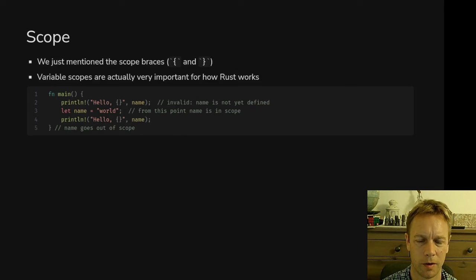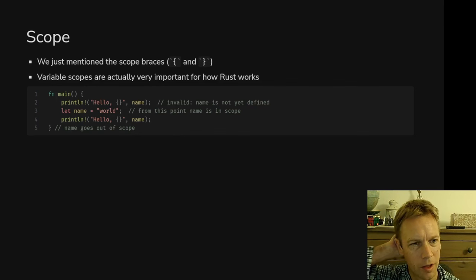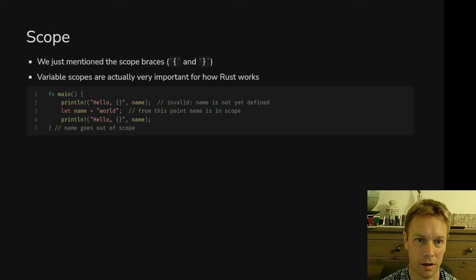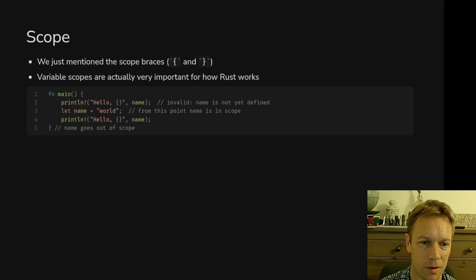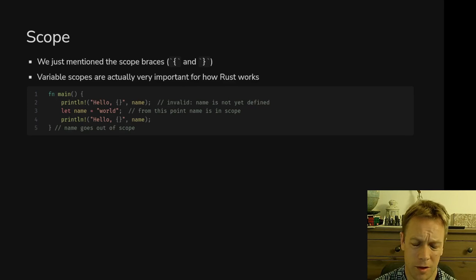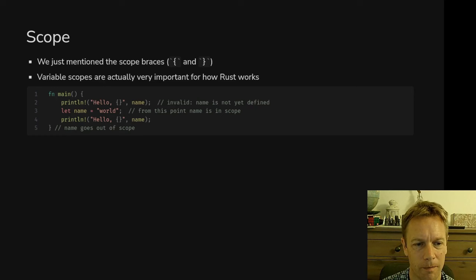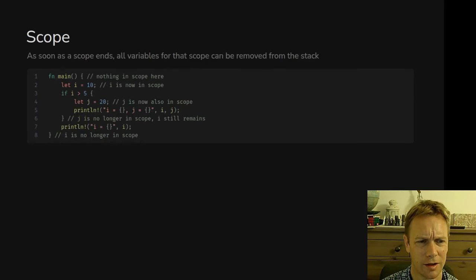Jumping back, we'll just review some of the stuff from the last video, because we're going to need these ideas. First of all, scope. We've got this idea that a variable is either in scope or out of scope. You can see that before the let statement on line three we can't talk about 'name' — on line two you can't talk about 'name' yet because we haven't declared it yet, so it's not yet in scope. Then 'name' stays in scope until you get to the closing curly bracket.